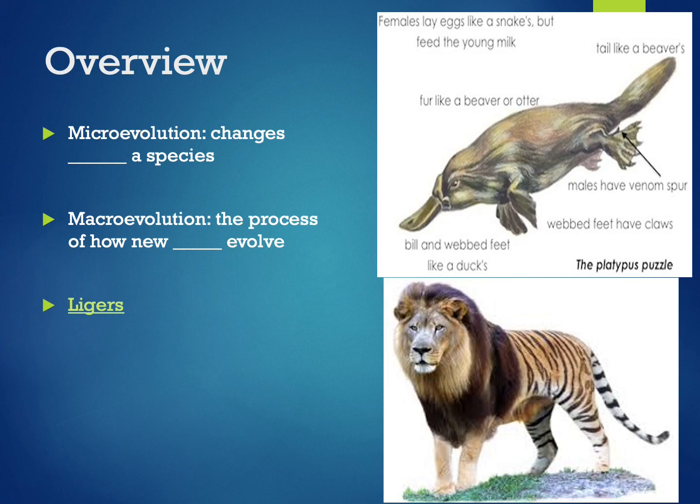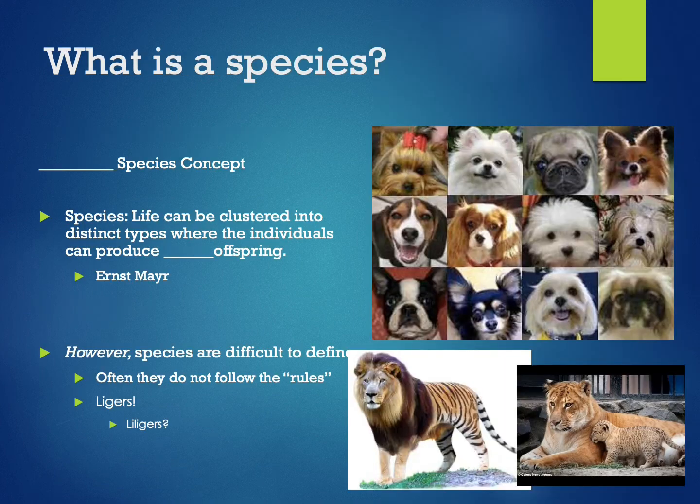Specifically, we'll talk about ligers. And if you haven't seen Napoleon Dynamite, you should definitely check it out. Also, the link in this PowerPoint, which I'll post in the announcements, is from an NPR article where they are breeding ligers to combat global warming.